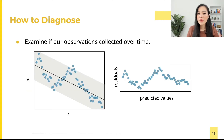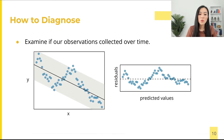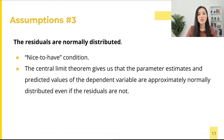To check independence, we can check if the observations are collected in a sequence and if there's any connection between cases that are close to one another. A pattern that is not random suggests a lack of independence. The left plot shows the sample data with their best-fitting lines, and the right plot shows the corresponding residuals. It's clear that in this case successive observations are highly correlated, so the independence assumption does not hold.